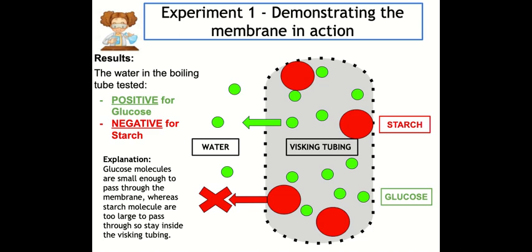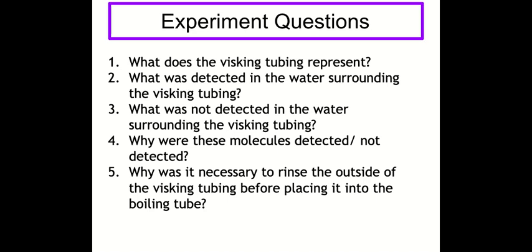It's really important you understand this experiment as experimental questions come up in the National 5 exam. Question one: what does the visking tubing represent? — the cell membrane. Question two: what was detected in the water surrounding the visking tubing? — glucose. Question three: what was not detected? — starch. Question four: why? — glucose was small enough to pass through the membrane into the water, whereas starch was too large. Question five: why was it necessary to rinse the visking tubing before placing it in the boiling tube? — if starch or glucose was accidentally left on the outside, you would find them in the water at the end even though they hadn't passed through the membrane, which would make the results invalid.